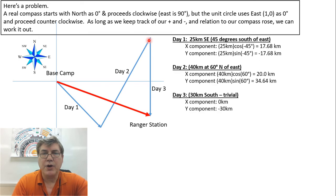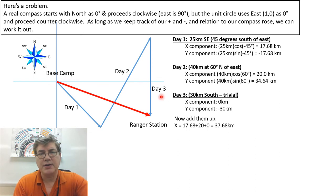And then on day three, day three is trivial, because how much do we change in the x direction? Well, not at all. We're going due south, so we're not going east or west. So it's zero in the x direction and minus 30 in the y. We can just add all these up. So we add all the x components up, 17.68 plus 20 plus zero, and we get 37.68. That's positive, so we have moved positive in the x direction.